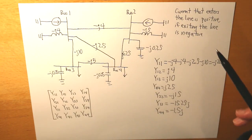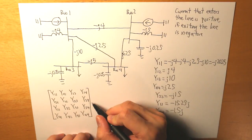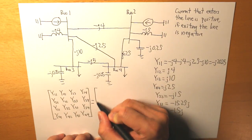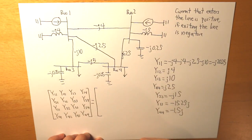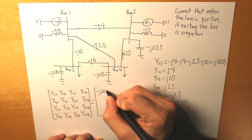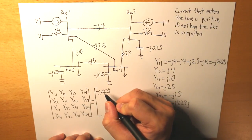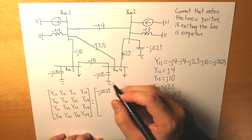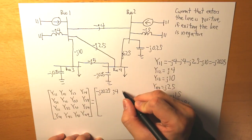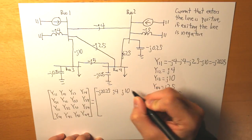Summing it all up, our complete admittance matrix is now determined with all four diagonal and off-diagonal values filled in.